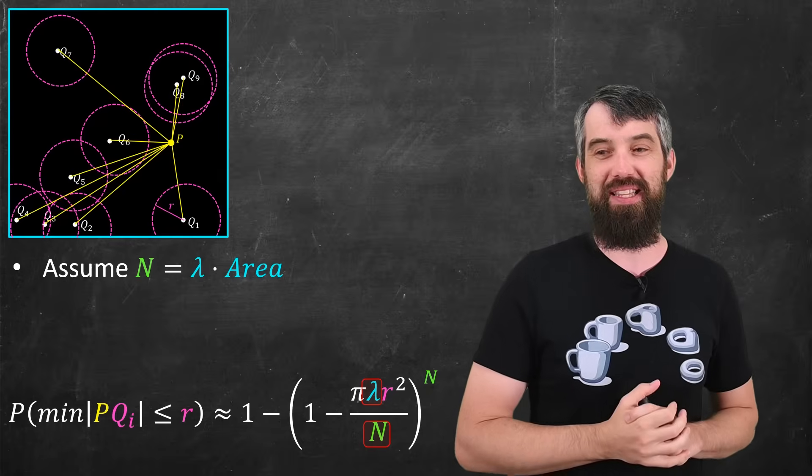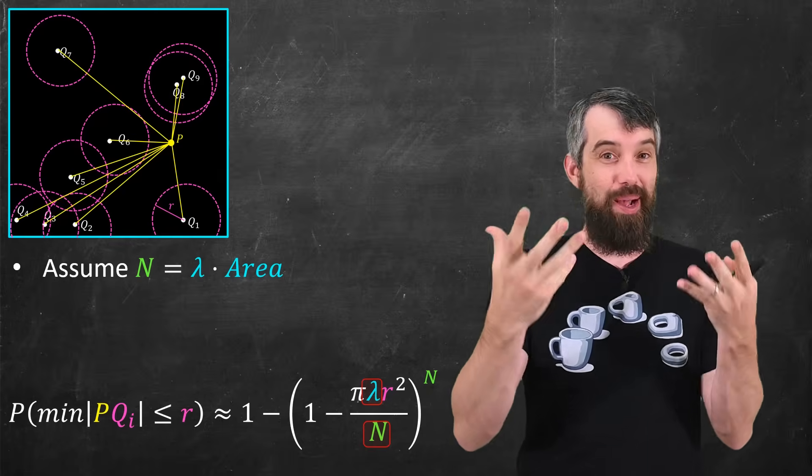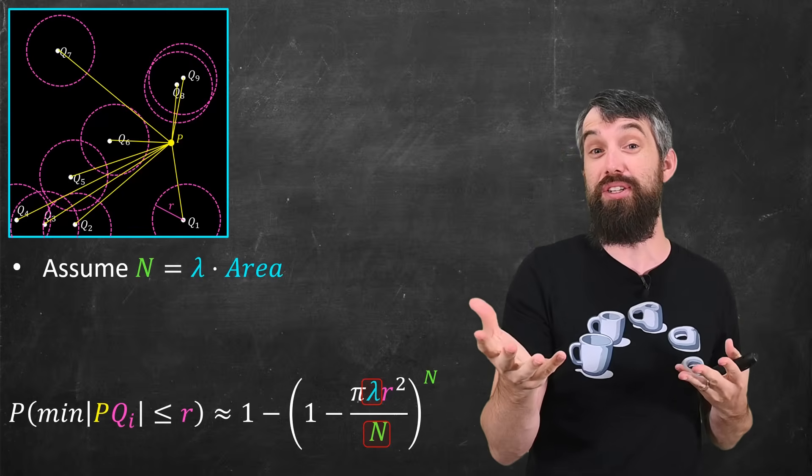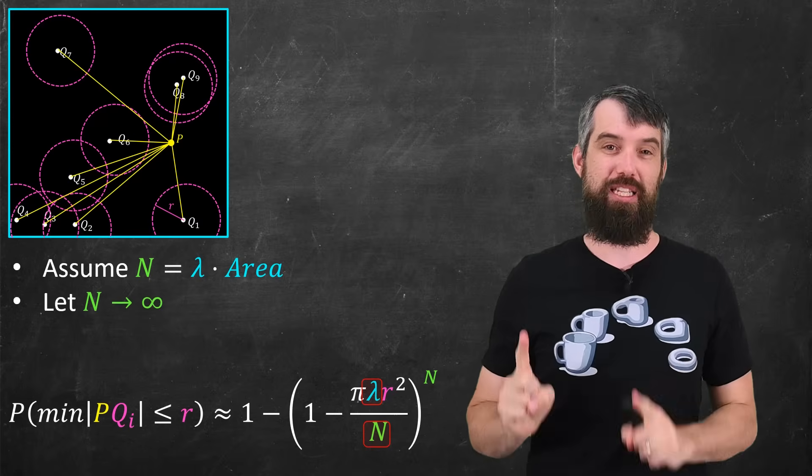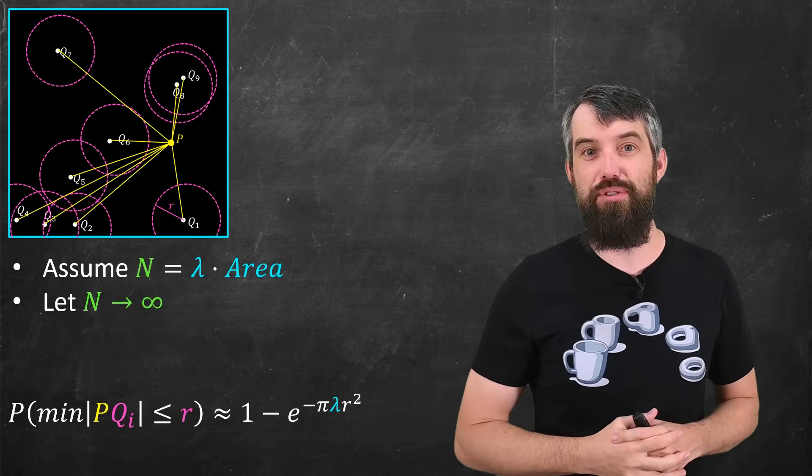You might well have seen this before. 1 minus something divided by n to the power of n when n is large. That is the limit definition of the exponential. And so in the limit as n goes to infinity, I get 1 minus the exponential of this negative lambda pi r squared.